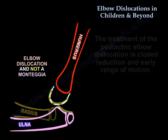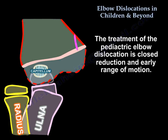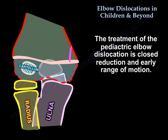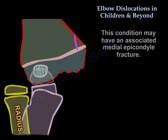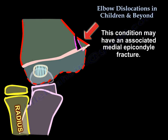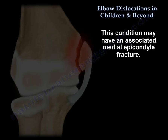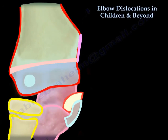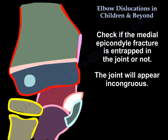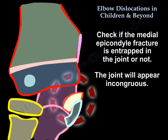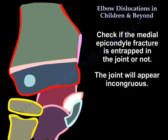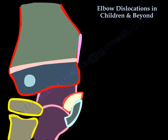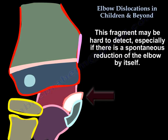Treatment of the pediatric elbow dislocation is closed reduction and early range of motion. This condition may have an associated medial epicondyle fracture. Check if the medial epicondyle fracture is entrapped in the joint or not — the joint will appear incongruous. This fragment may be hard to detect, especially if there is a spontaneous reduction of the elbow.